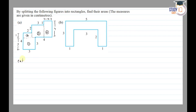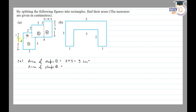We will find the area of shape 1. The length and breadth are both 3, so the area is 3 into 3, which equals 9 cm². Area of shape 2: length into breadth is 1 into 2, so the area is 2 cm². Area of shape 3 is the same: 3 into 3, so we have 9 cm².